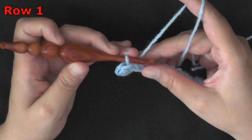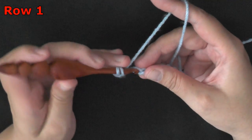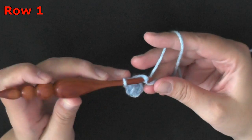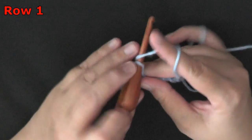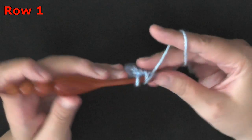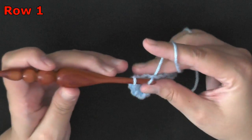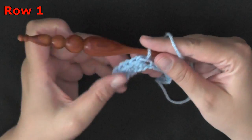Then you'll repeat this for the row. You'll do a half double crochet, and then the next will be a slip stitch, half double crochet, and then a slip stitch. You want to repeat this all the way down your row.